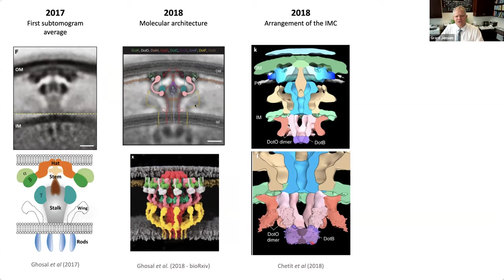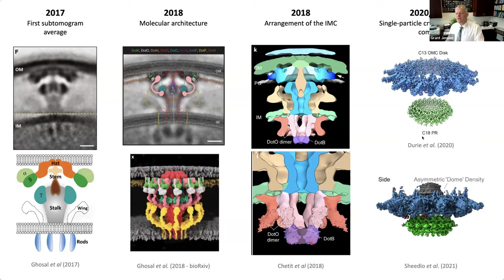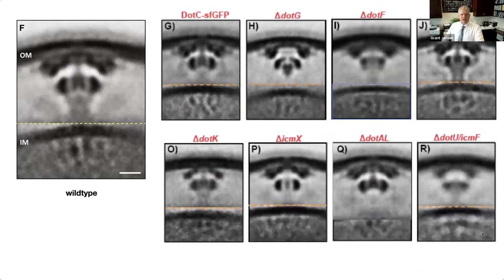While we focused on the periplasmic region, Jun Liu's group focused on the cytoplasmic region and resolved that in the cytoplasm there is a hexamer of dimers of a protein called dot O, and the dot B protein binds at the tip - both are ATPases. They resolved the molecular architecture of the cytoplasmic complex. Then in 2020 and 2021, two very important papers from Melanie Oy's lab used single particle reconstructions of purified parts of the secretion system: the outer membrane complex had 13-fold symmetry, and the periplasmic ring had 18-fold symmetry.